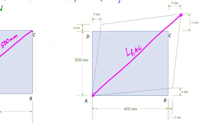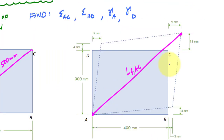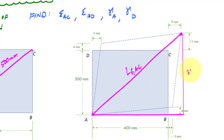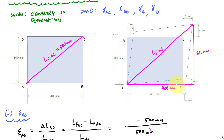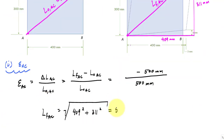Now I need to find the final length of AC. Focusing on the deformed shape, point C moved up 11 millimeters, so the vertical leg becomes 300 plus 11, which is 311 millimeters. Point C also moved 9 millimeters to the right, making the horizontal leg 400 plus 9, which is 409 millimeters. Using the Pythagorean theorem, the final length of AC is 513.81 millimeters.